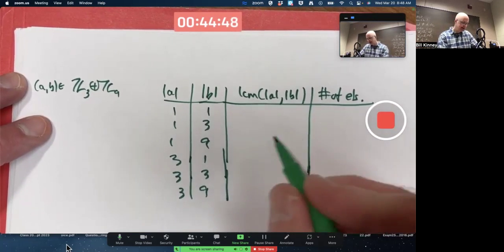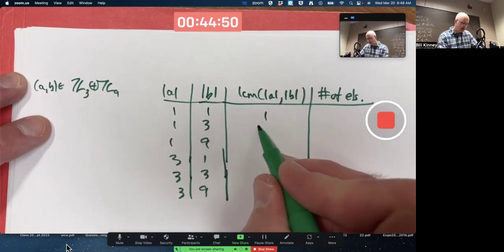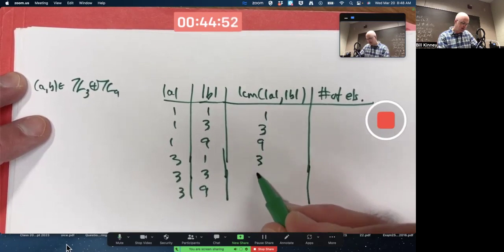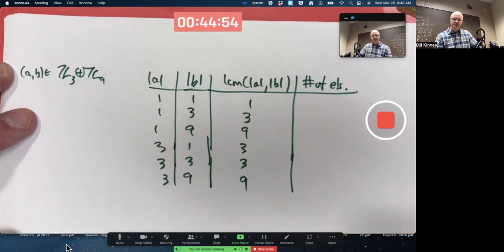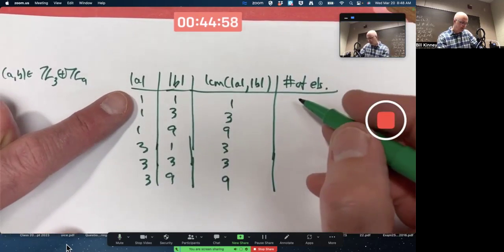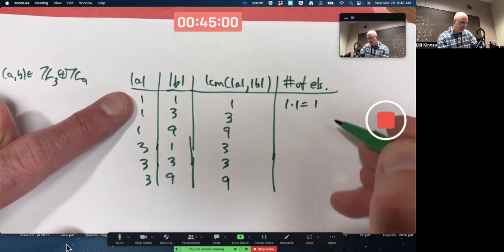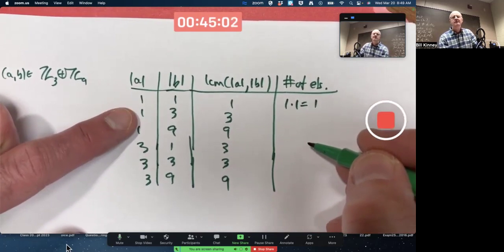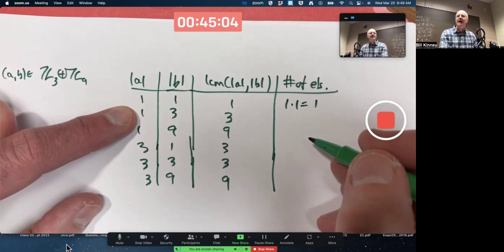What's the LCM in each case for each row? One, three, nine, three, three, nine. What's the number of elements for each row? One times one is one. Careful, the next row is not one times one.